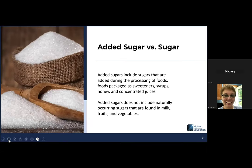With the new sugar limits, it refers to added sugar. The added sugars include sugars that are added during the processing of foods, foods packaged as sweeteners, syrups, honey, and concentrated juices. Added sugars does not include the naturally occurring sugars that are found in milk, fruits, and vegetables—that's your lactose, your fructose, things like that.